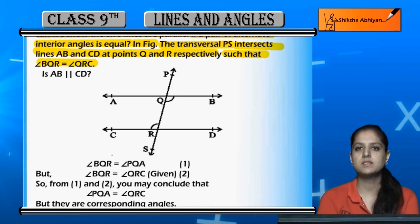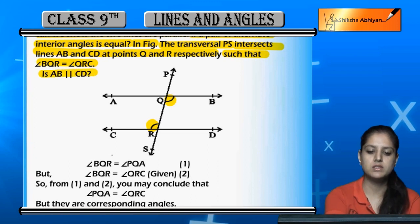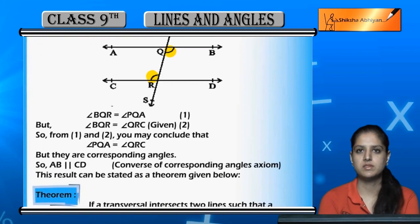Such that angle BQR and angle QRC are equal - this angle is equal to this angle. So if these angles are equal and these are alternate interior angles, will AB and CD be parallel? Let us see, is it possible or not?